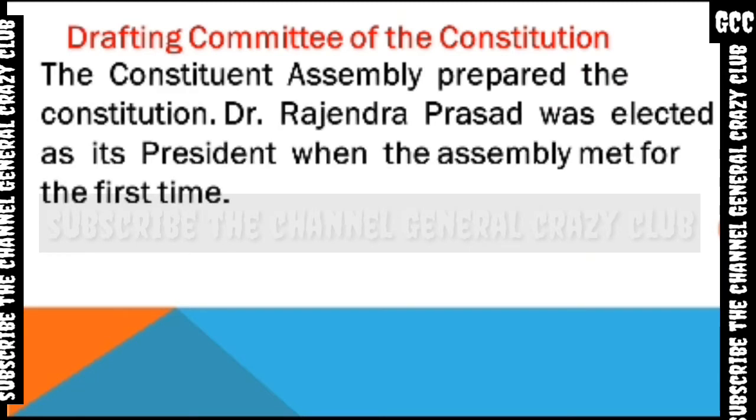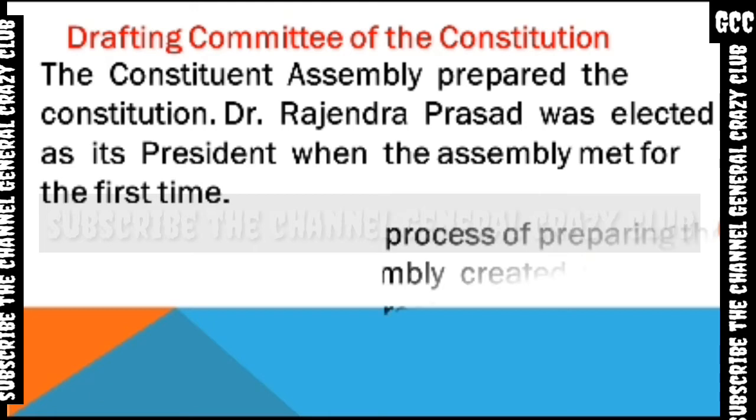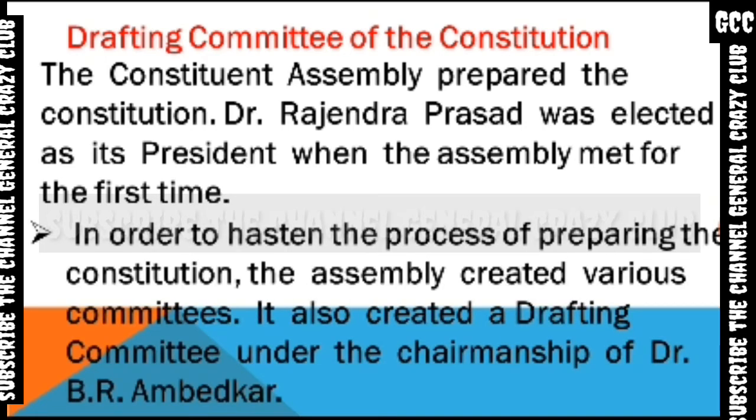The Constituent Assembly prepared the Constitution. Dr. Rajendra Prasad was elected as its President when the Assembly met for the first time. There were 299 members in the Assembly. The first session was held on 9th December 1946. The Drafting Committee is the committee that prepares a draft constitution and places it before the Constituent Assembly for discussion and approval.